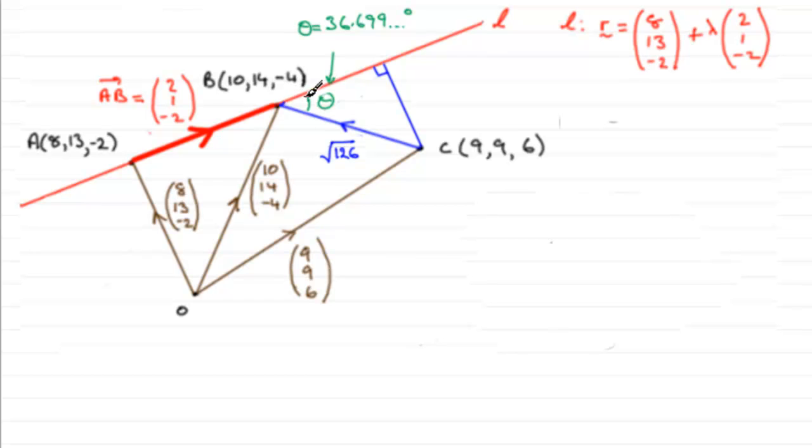So we can use this right angle triangle because we already know the angle theta from the last part. We found out that theta was 36.699 degrees. So if we call this shortest distance d, then to get d I just use basic trigonometry. It would be the sine of theta equals the opposite side d over the hypotenuse, the root of 126.